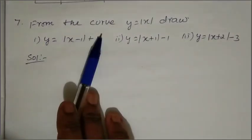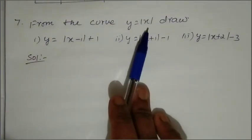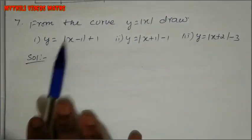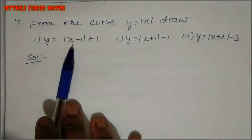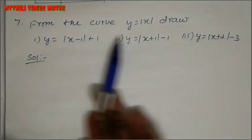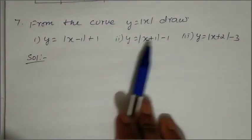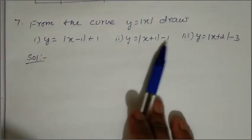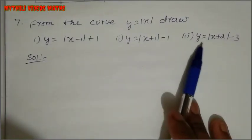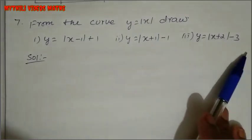From the curve y equal to mod x, draw: first, y equal to modulus of x minus 1 plus 1; second, y equal to modulus of x plus 1 minus 1; third, y equal to modulus of x plus 2 minus 3.